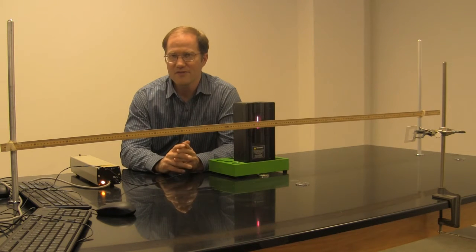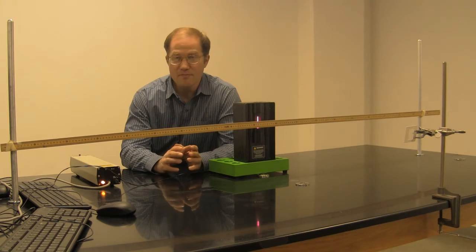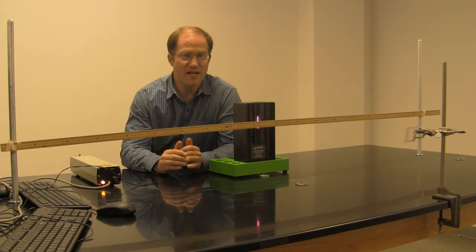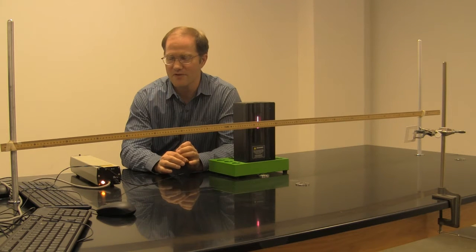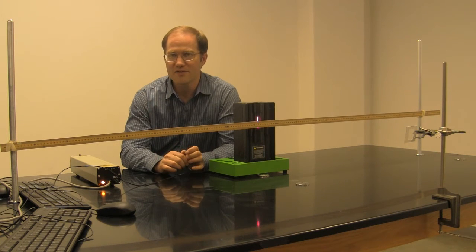When n is equal to five, you get the wavelength for the blue photon emitted by hydrogen. And when n is equal to six, you get the wavelength for the violet photon emitted by hydrogen.